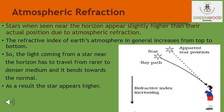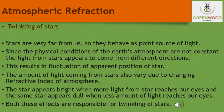This apparent position of the star is not stationary but keeps on changing slightly since the physical conditions of the earth's atmosphere are not stationary. The twinkling of a star is due to the atmospheric refraction of starlight. The starlight on entering the earth's atmosphere undergoes refraction continuously before it reaches the earth. Since the stars are very distant, they approximate point-sized sources of light. As the path of rays of light coming from the star goes on varying slightly, the apparent position of the star fluctuates and the amount of starlight entering the eye flickers. The star sometimes appears brighter and at other times fainter, which is the twinkling effect.